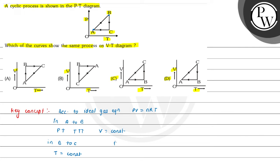From C to A, in this process, pressure is equal to constant and temperature is decreasing. So we can write that volume is also decreasing.